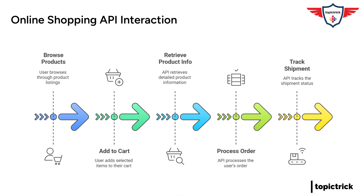One of the most relatable examples is online shopping. Every time you browse products, add items to your cart, or make a purchase, you're interacting with a network of REST APIs. The e-commerce site you're using is likely using APIs to connect to various backend systems — like inventory management, payment processing, shipping logistics, all that stuff. These APIs allow the website to seamlessly retrieve product information, process orders, and track shipments, all happening behind the scenes without you even realizing it.